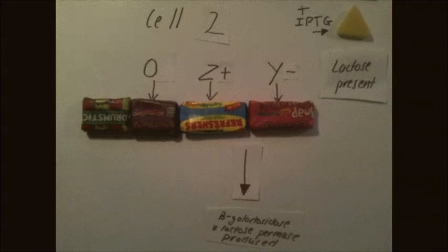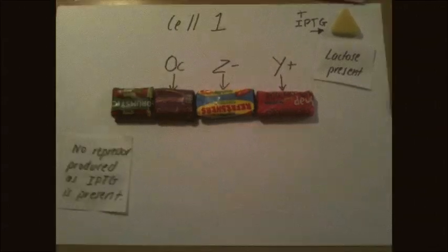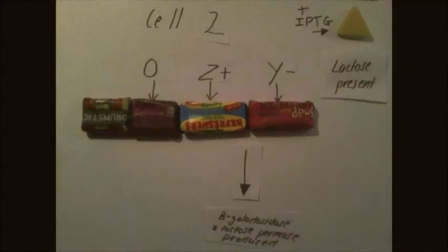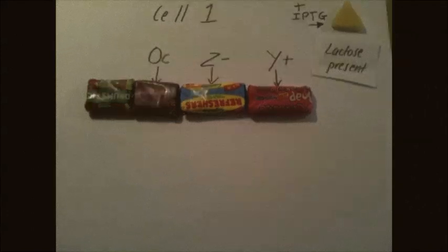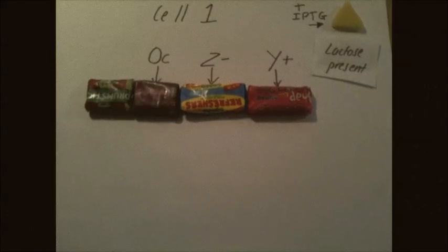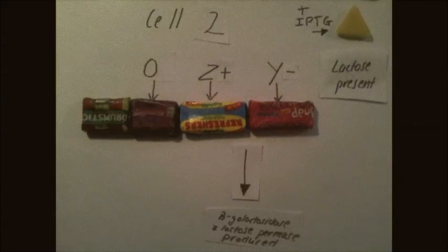In Cell 2, there is lactose present and beta-galactosidase and lactose permease are produced. In Cell 1, no repressor is produced.